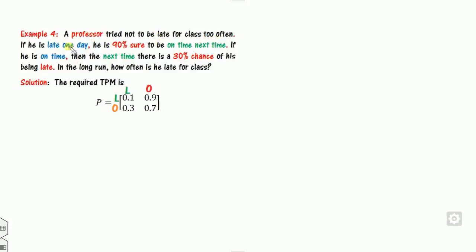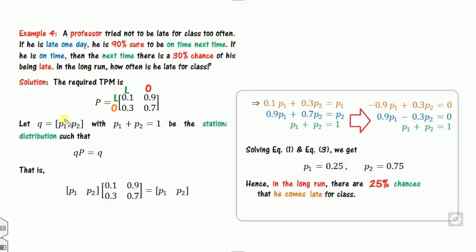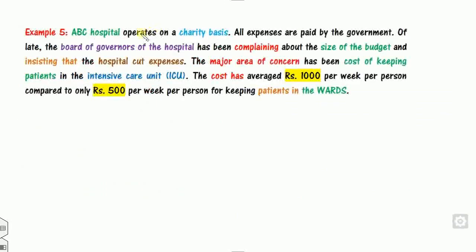Example 4: A professor tries not to be late for class. If he is late one day (state L), there is a 90% chance he will be on time the next day (state O), and a 10% chance he is late again. If he is on time, there is a 30% chance he will be late the next day. Find how often in the long run he is late for class. With a 2×2 TPM, solve for p1 and p2. The result is a 25% chance he is late in the long run.